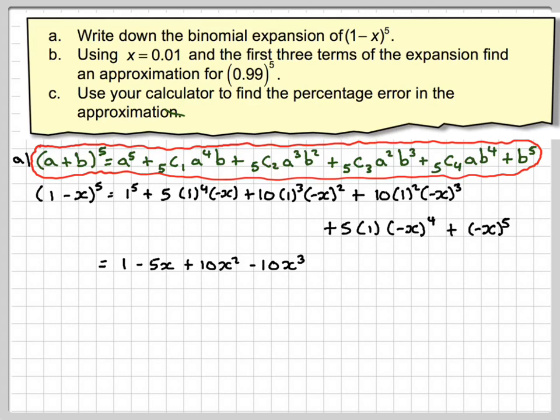When you cube a negative number it's negative. This is positive so it's going to be plus 5x to the power of 4 minus x to the power of 5. So that's the expansion of 1 minus x to the power of 5.